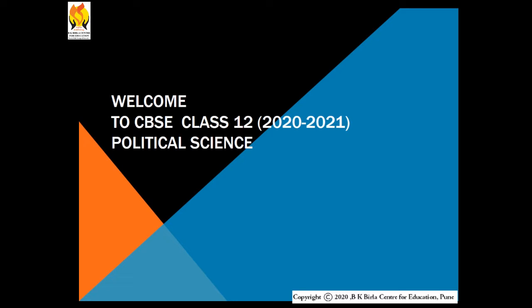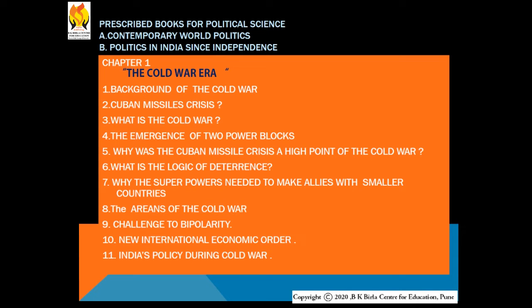Welcome to CBC Class 12, 2020-2021 Political Science. Hope you are all doing well and in good health. Let's get started. The books for political science are: first, Contemporary World Politics, and second, Politics in India Since Independence. Today I am going to teach you the first chapter of the first book, that is, the Cold War Era. Before starting this chapter, you have to remember 11 factors so that after listening to my video, when you go through the textbook, it will be easy to understand.